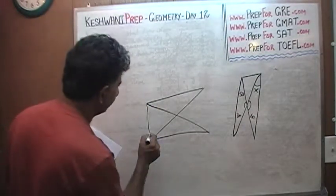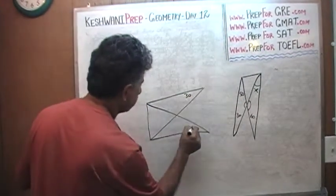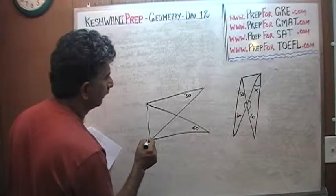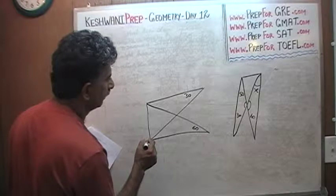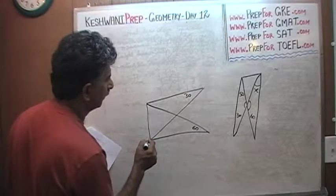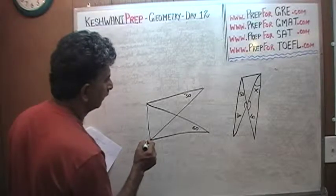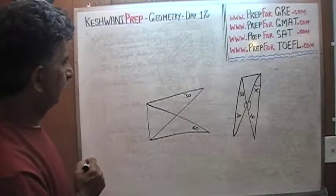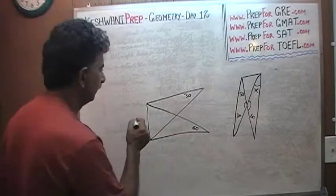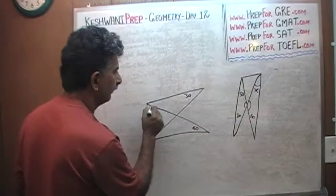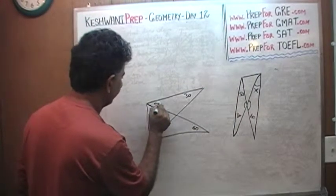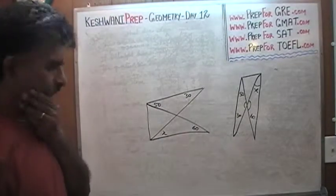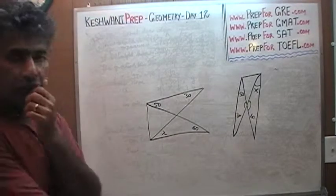I am going to redraw the same picture. So, 30 and 60. Is that right? It doesn't matter. Let me redraw this angle. Let's call this 50 and x. 50 and x degrees. There we go. How do we go about it?